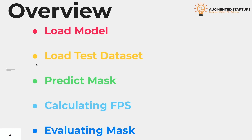In the second step, we will load the test dataset from which images will be used. And in the third step, we will predict the mask for these images. While predicting the mask, we will also calculate the FPS. And in the last step, we will evaluate the mask to compare the predicted mask with the ground truth mask, and also calculate different metric scores.